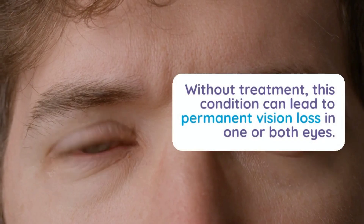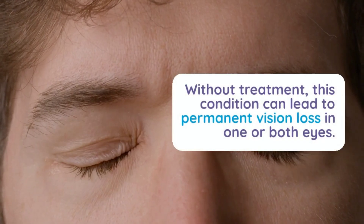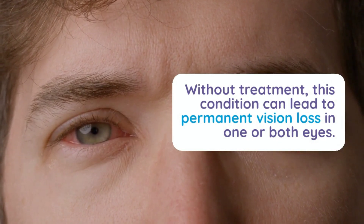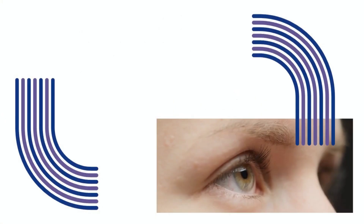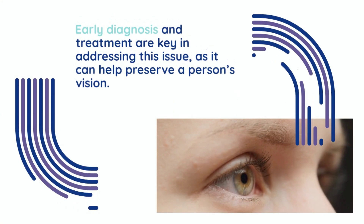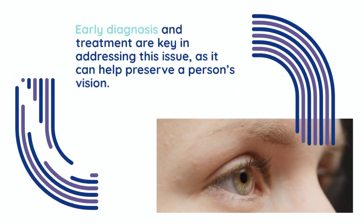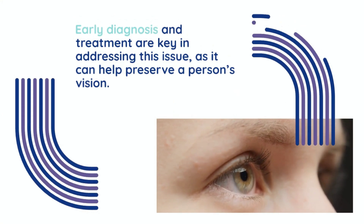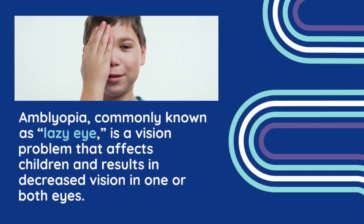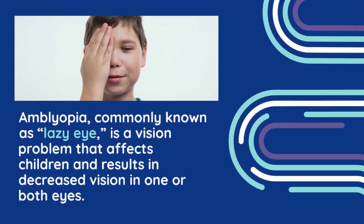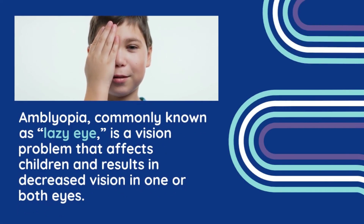Symptoms: Blurred or diminished vision — the affected eye may not see as clearly as the other. Poor depth perception and difficulty judging distances. Squinting or closing one eye — a child might squint or close one eye to see better. Head tilt — tilting the head to one side to improve vision.